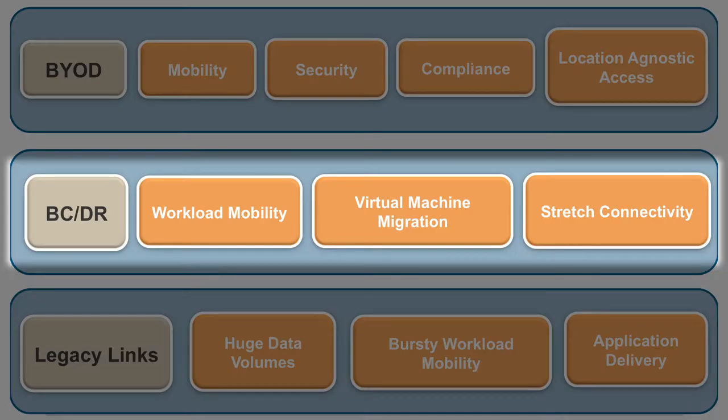The combination of vast amounts of unstructured data collected for analysis and the computing power available in the cloud are driving the adoption of a hybrid cloud model. Whether it be for business continuity, disaster recovery, or agility, you need to be able to move virtual machines, applications, or data across data center locations. This requires a layer 2 network to be available over the DCI.